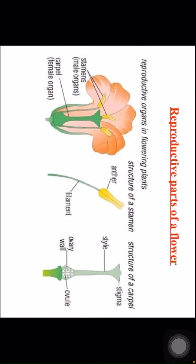Observe the reproductive parts of the flower: stamens, carpel, structure of a stamen — anther and filament; structure of carpel — stigma, style, ovary wall, and ovule.